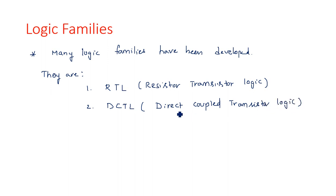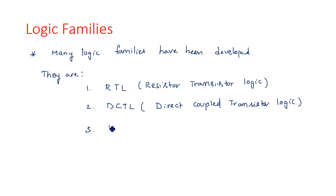The name clearly tells that in the first case we are using resistors and transistors to build the logic circuits. In the second case we are also using transistors and resistors, but here if two transistors are connected one after another, there is a direct coupling from the output of the first transistor to the input of the second transistor — no coupling element. That is the meaning of direct coupled. The third one is Diode Transistor Logic.